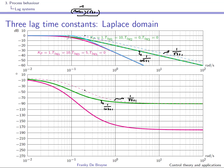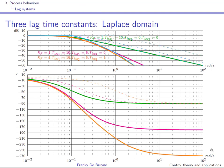Using the approximation: the first lag time constant of 10 seconds acts first, then the second lag time constant adds its effect. For the phase shift, you add the contributions as well, and you can see that at low frequencies the phase shift is near zero degrees, while at high frequencies it tends to minus 180 degrees. The slopes of the individual first order systems are both minus 20 dB per decade, so above the second cutoff frequency the combined slope becomes minus 40 dB per decade.